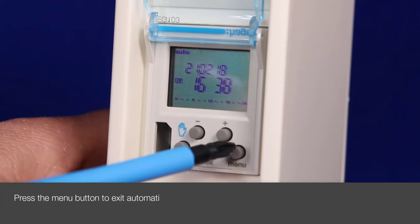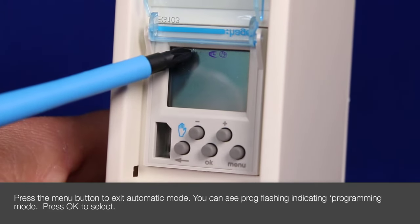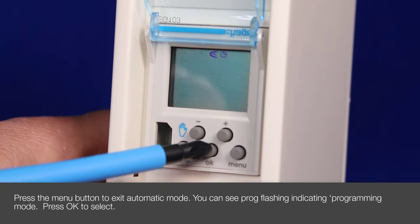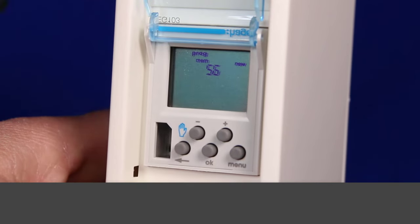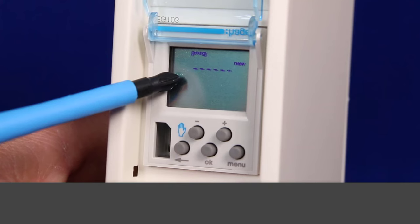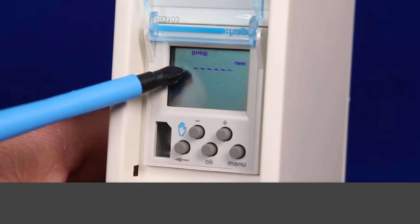Firstly then, by pressing the menu button we exit automatic mode and have menu options. You can see PROG is flashing indicating we are now in programming mode. To select this while flashing we press OK. It then gives us a brief indication that we have 56 programming steps remaining. This clock is not programmed yet and therefore you have 56 programming steps to do.